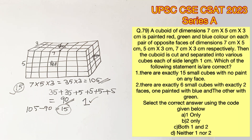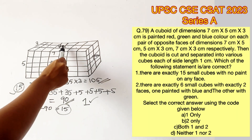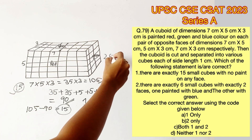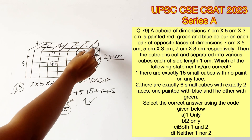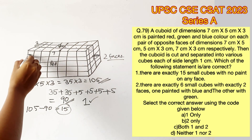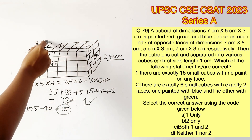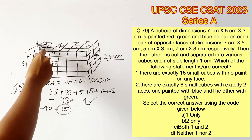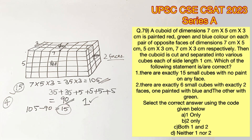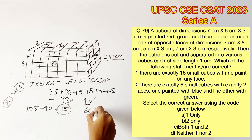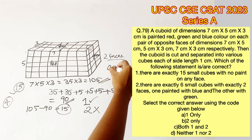Statement 2 says there are exactly 6 small cubes with exactly two faces painted, one blue and one green. Looking at the edges where blue and green faces meet, corner cubes cannot be counted since they have three painted faces. Only the non-corner edge cubes qualify. There are 2 such cubes on top and 2 on the bottom, giving a total of 4 cubes, not 6. Therefore Statement 2 is false, and option A is the correct answer.